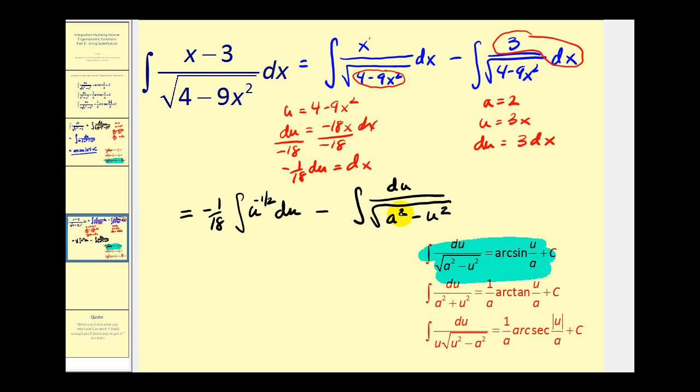So now we can find both of these antiderivatives. For the first one, we'd have negative one eighteenth times u to the one half divided by one half. Well, u is equal to four minus nine x squared, and then dividing by one half is the same as multiplying by two. And for the second integral, we're going to have arc sine u over a, which will be arc sine three x divided by two plus c.